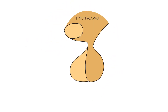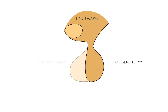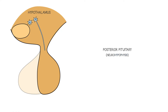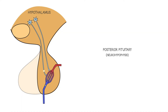The pituitary gland itself is made up of two parts with different embryological origins. The posterior pituitary gland is technically known as the neurohypophysis — this word means downgrowth because it's a downgrowth of the brain. It contains the terminals of nerve fibers originating in the hypothalamus, and when those nerves are stimulated, the posterior pituitary releases its hormones into the blood.